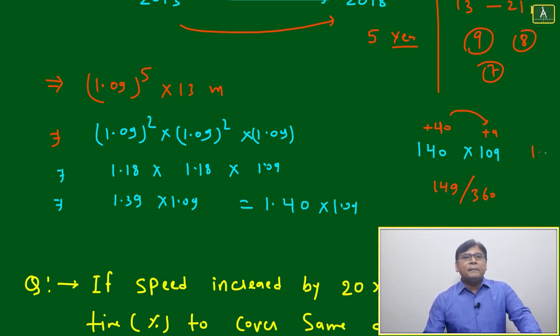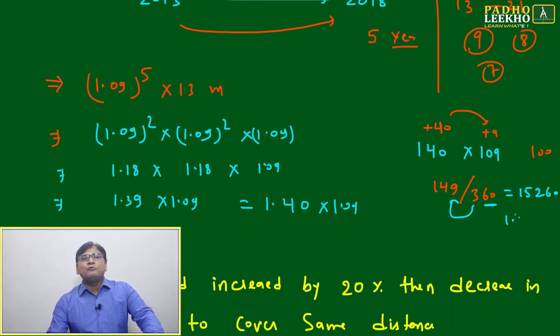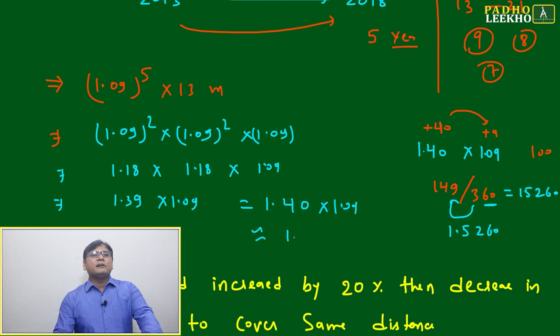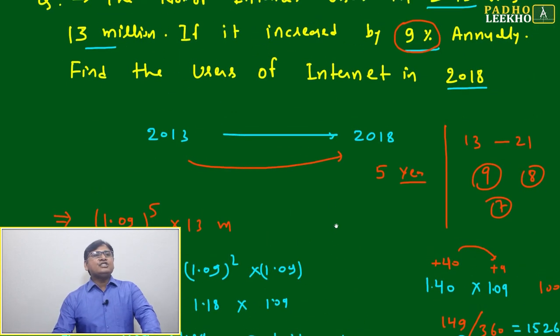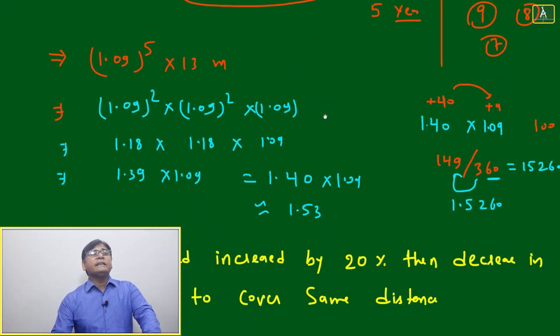Because the base is 100, you write only two digits on the right side. The extra 3 goes to the left, so 149 becomes 152 and 60 remains. If you put the decimal back—1.40 times 1.09 has decimal after two digits each, so after four digits in multiplication—you get 1.5260, approximately 1.53. So 100 has changed to 153.